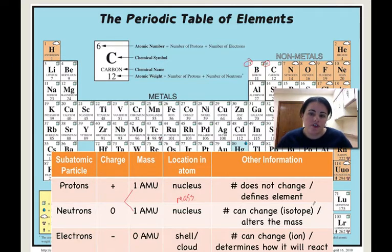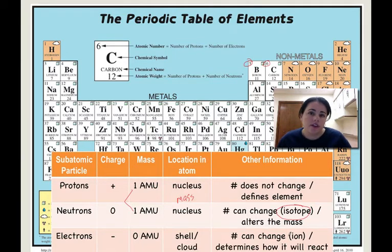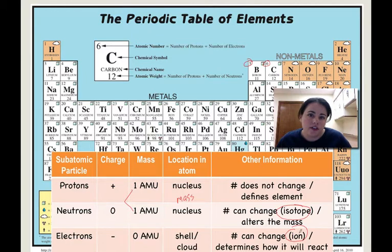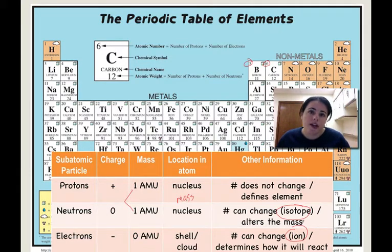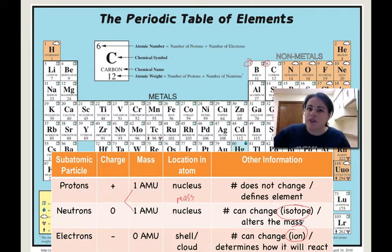The number of neutrons can change, and that's what we call isotopes — it affects the mass number. You can also change the amount of electrons in an atom, and when you do that, it's called an ion. Ions — whether an atom is gaining or losing electrons — determine how that atom is going to react with other atoms and form chemical reactions and substances.